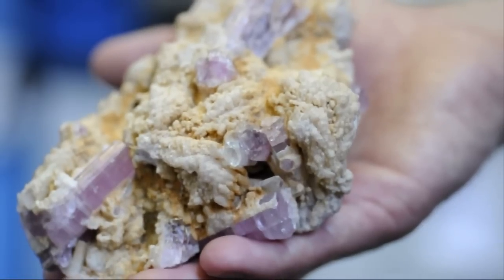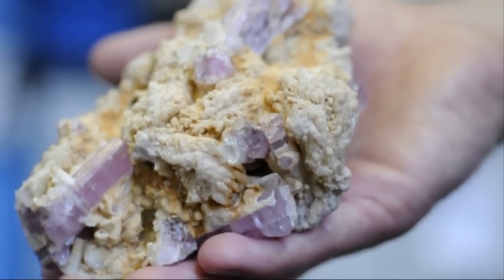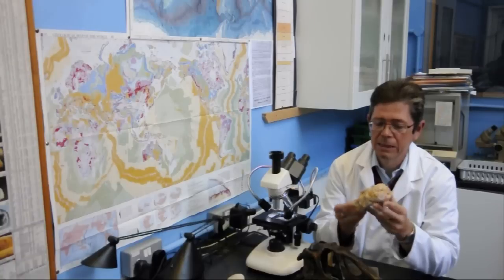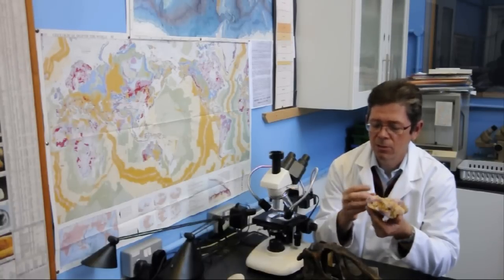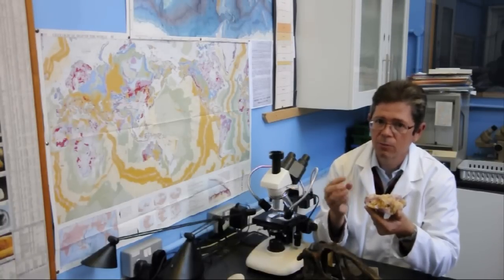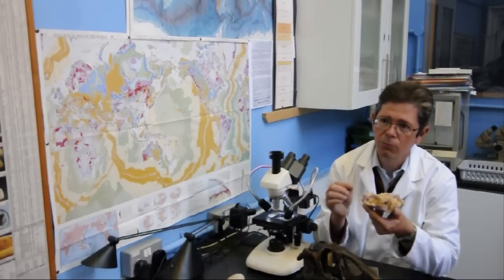In this case, this pink mineral here is a mineral called tourmaline, and the variety is called rubellite. And the reason it has nice crystals is because the atoms within it arrange in a regular framework.